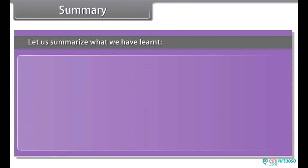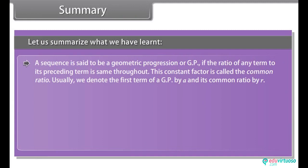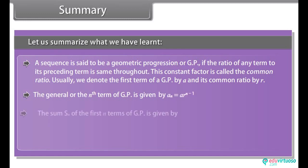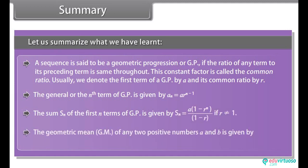Summary: A sequence is said to be a geometric progression or GP if the ratio of any term to its preceding term is the same throughout. This constant factor is called the common ratio. We denote the first term of a GP by A and its common ratio by R. The general nth term of GP is Aₙ = A×R^(n−1). The sum Sₙ of the first N terms of a GP is given by the formula. The geometric mean of any two positive numbers A and B is G = √(AB), and the sequence A, G, B is a GP.